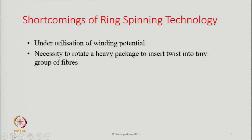The second shortcoming is the necessity to rotate a heavy package to insert twist into a tiny group of fibers. In ring spinning, we have a big spindle which is quite heavy. Then on top of the spindle we put a bobbin — mostly nowadays they are made of plastic material. And we need to rotate this heavy spindle just to insert twist into a tiny group of fibers.